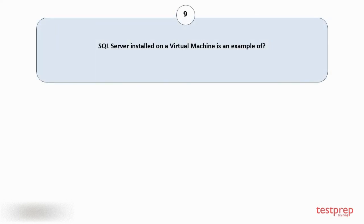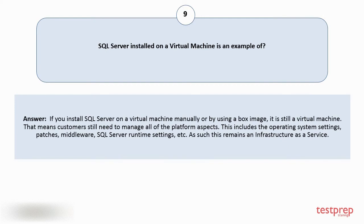Question number nine: SQL Server installed on a virtual machine is an example of? Your answer is: if you install SQL Server on a virtual machine manually or by using a box image, it is still a virtual machine. That means customers still need to manage all of the platform aspects, including the operating system settings, patches, middleware, SQL Server runtime settings, etc. As such, this remains an infrastructure as a service.